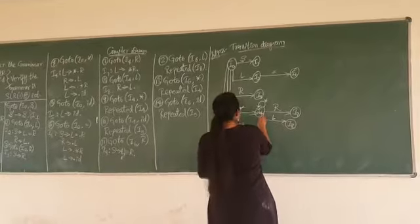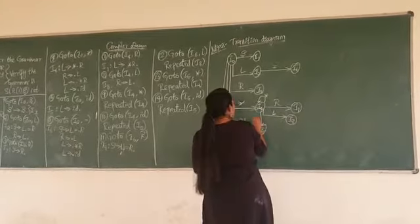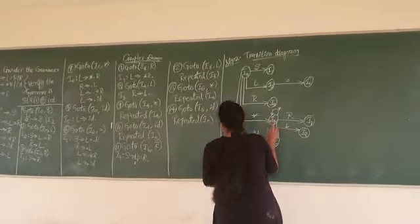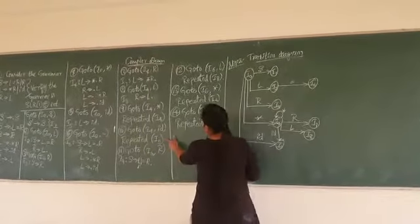I4 upon ID is I5. This is I4 upon ID, it is I5. This is done.